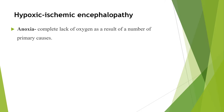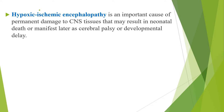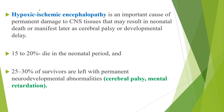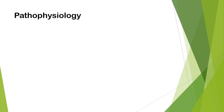As the most serious sequela of PNA, hypoxic ischemic encephalopathy: we say anoxia if there is a complete lack of oxygen, hypoxia if there is decreased arterial concentration of oxygen, and ischemia if blood flow to cells or organs is insufficient to maintain normal function. HIE is an important cause of permanent damage to CNS tissues, potentially resulting in neonatal death or manifesting later as cerebral palsy or developmental delay. 15 to 20 percent die in the neonatal period, and 25 to 30 percent of survivors are left with permanent neurodevelopmental abnormalities like cerebral palsy and mental retardation. The greatest risk of adverse outcome is seen in infants with fetal acidosis with pH less than 7, a 5-minute Apgar score less than 3, stage 3 HIE, and multi-organ system involvement.